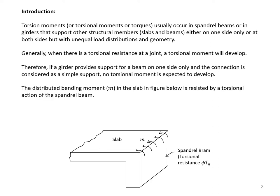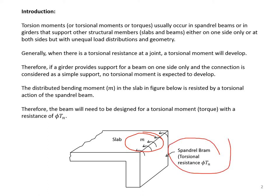The distributed bending moment M in the slab, as you can see in the figure below, is assisted by a torsional action of the spandrel beam. Therefore, the beam will need to be designed for a torsional moment — sometimes called the torque — with a resistance of phi multiplied by T sub n, where phi is the resistance reduction factor for torsion and T sub n is the nominal torsional capacity of a section.